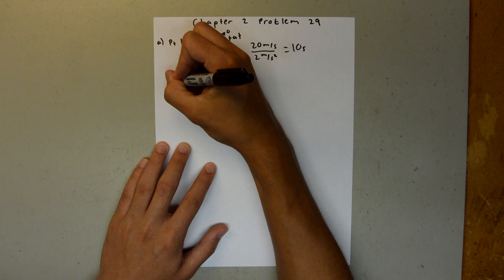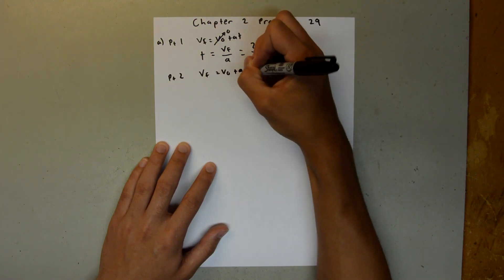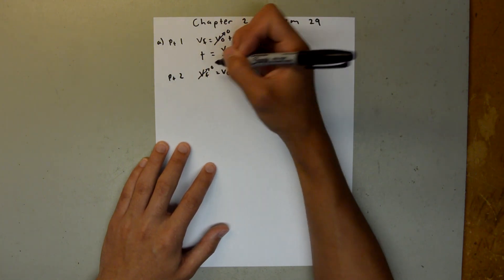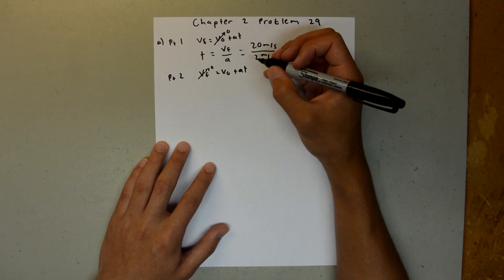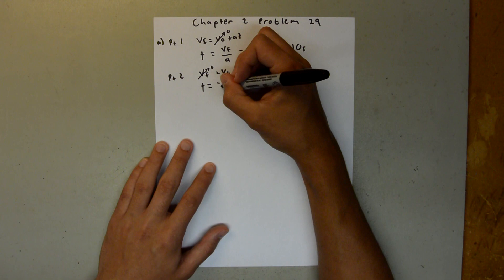And then for Part 2 of the trip, we can use the same equation, except this time our final velocity is 0, and we can again rearrange this for time and say time is equal to negative V0 over A.